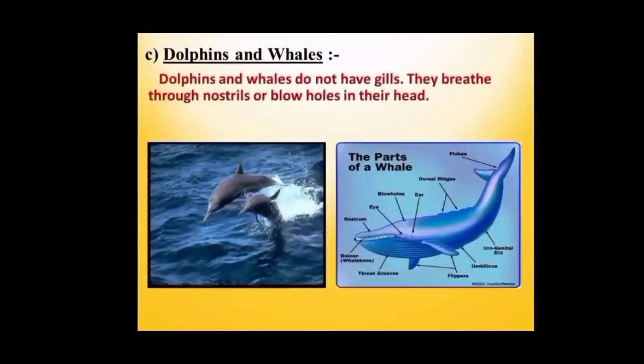Some other sea animals like dolphins and whales do not have gills. They breathe in air through nostrils or blowholes that are located on the upper parts of their head. This allows them to breathe in air when they swim near the surface of water. They can stay inside the water for a long time without breathing, but they come out to the surface from time to time to breathe in air. Did you ever see this interesting activity of dolphins in television programs or films on ocean life?